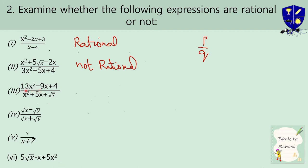Look at the third question: 13x squared minus 9x plus 4 divided by x squared plus 5x plus root of 7. It is written in P by Q form, but don't be confused by the root of 7 — that is a number, not a variable in the root. The variable values are not under the root, so this is rational. The fourth expression has variable values all under roots, so you can directly say it is not rational.